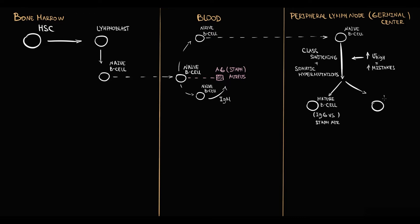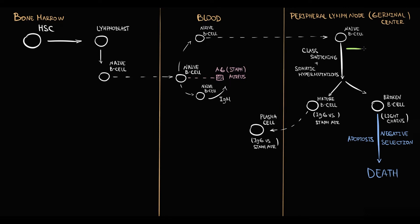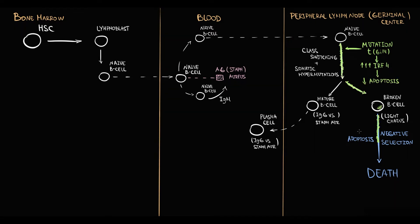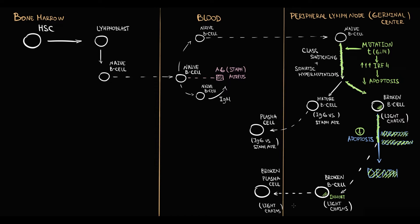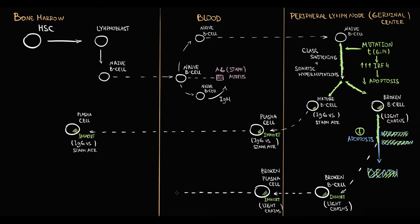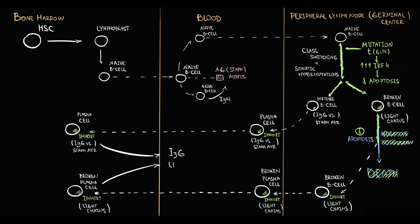The problem is that mutations in plasma cells inhibit apoptosis or stimulate cellular proliferation, or both. This makes negative selection impossible and results in formation of immortalized B cells that then become immortalized plasma cells. It can be a broken plasma cell that secretes just immunoglobulin light chains, or it can be a normal plasma cell that secretes immunoglobulin G, for example. And these cells come into the bone marrow from where they secrete immunoglobulins, which are monoclonal immunoglobulins.